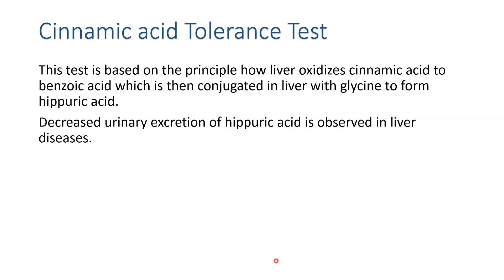The next test is the cinnamic acid tolerance test. This test is also based on the principle of how a healthy liver oxidizes cinnamic acid into benzoic acid. The liver oxidizes cinnamic acid into benzoic acid, which then conjugates with glycine to be converted into hippuric acid for excretion. Decreased urinary excretion of hippuric acid after administration of cinnamic acid indicates liver damage or liver disease.